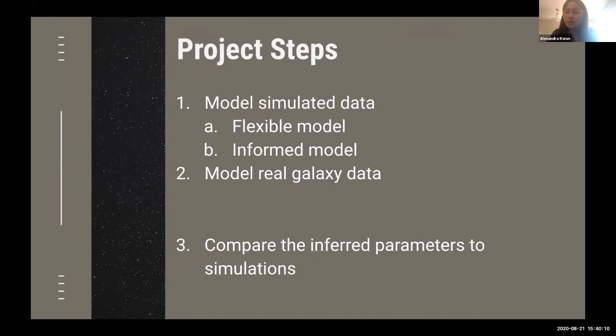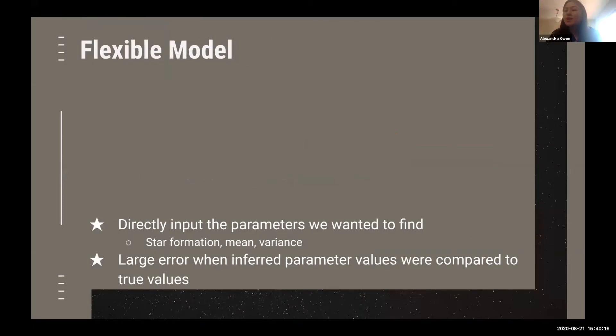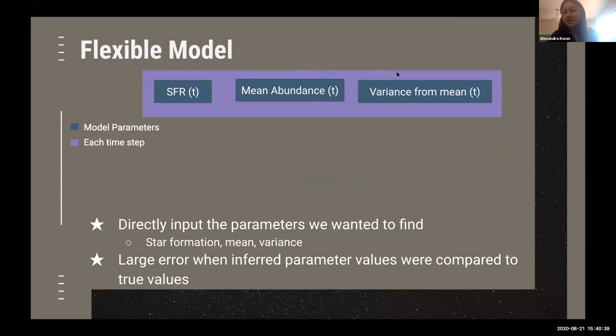So far we've made a flexible model and we are working now on making a more informed model. Our flexible model is what we first began with. We directly put the chemical evolution parameters into our likelihood equations. These parameters are the star formation rate, which tells us approximately how many stars are formed, the mean abundance, which tells us what metallicity we should anticipate from these stars, and the variance from that mean. We took the simulation and divided it into separate time steps. At the end, we can compare how the parameters have changed from each time step and therefore the overall chemical evolution.